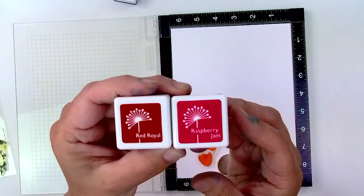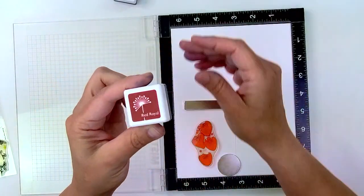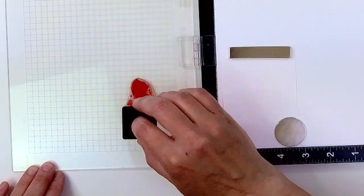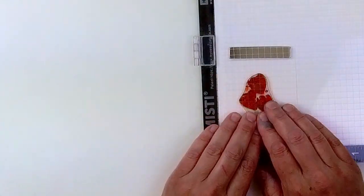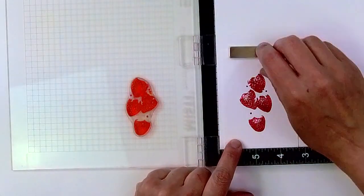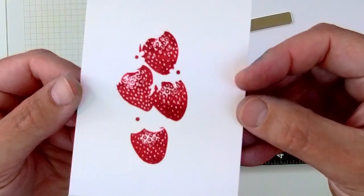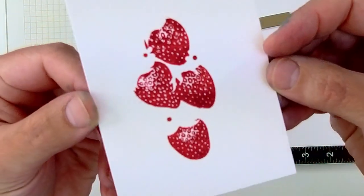I've cut some cardstock down to three by four and a quarter, and I'm going to use that red royal ink to stamp my first layer of strawberries. I recommend stamping this layer only one time so that you maintain the definition of the seeds and the light reflections.